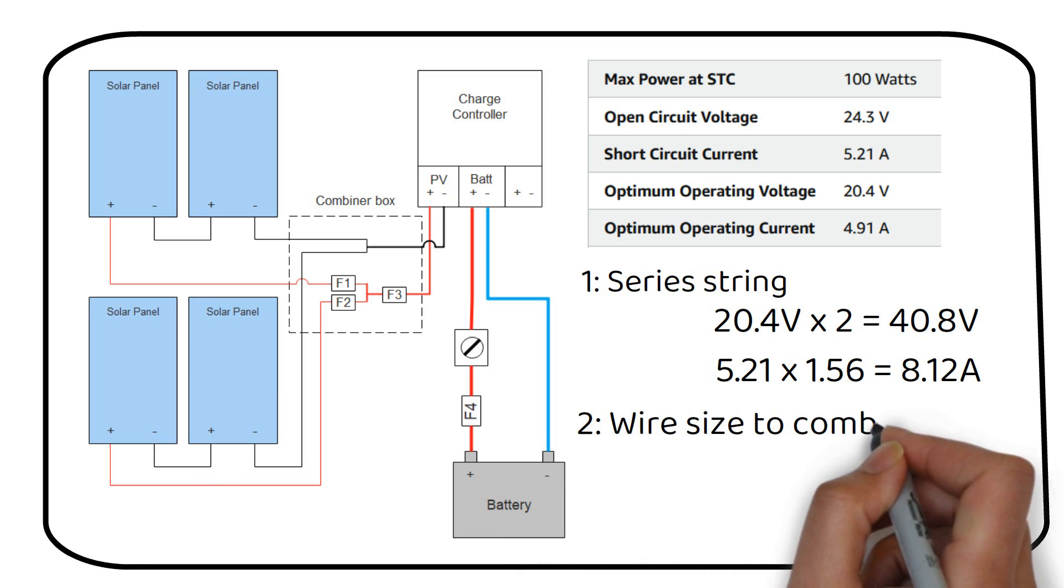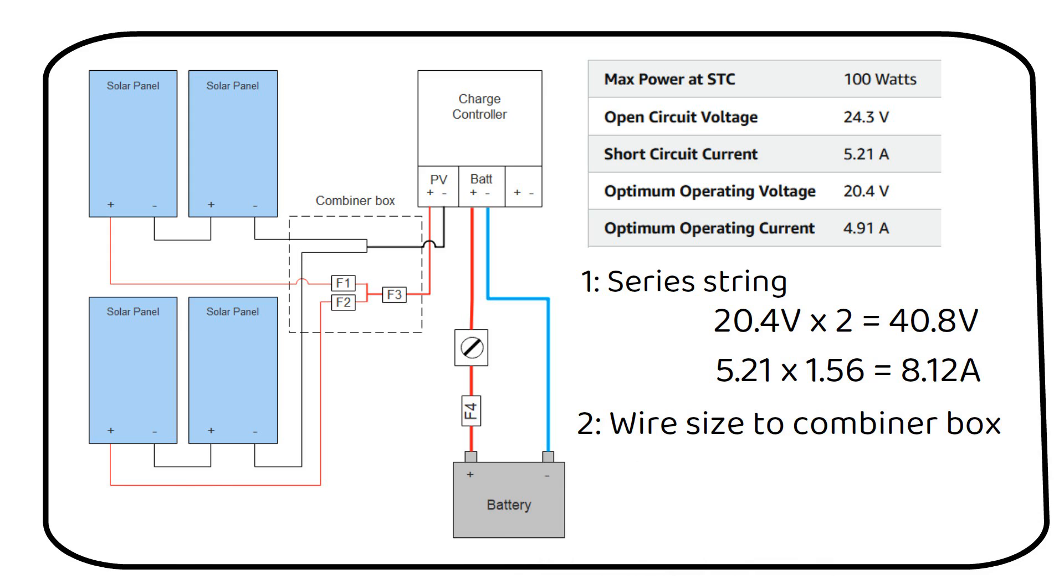Step 2: Wire sizing to combiner box. With this amount of solar panels, you won't have a big solar array. So you can use the existing leads attached to the solar panel to bridge the distance to the combiner box. However, if you have a larger array, you'll most likely need to run solar extension cables to the combiner box. You would then need to calculate the voltage drop to the combiner box too.